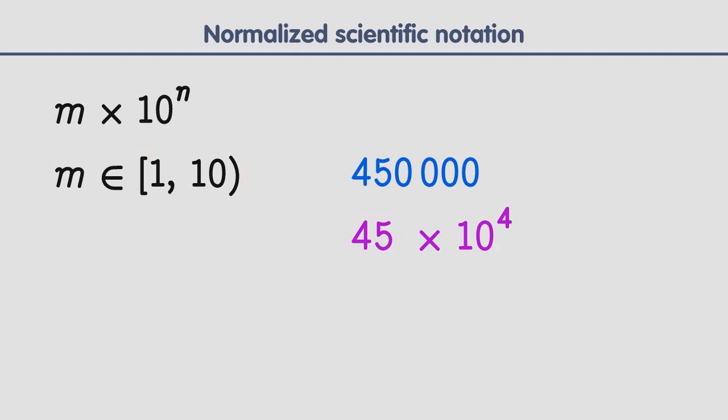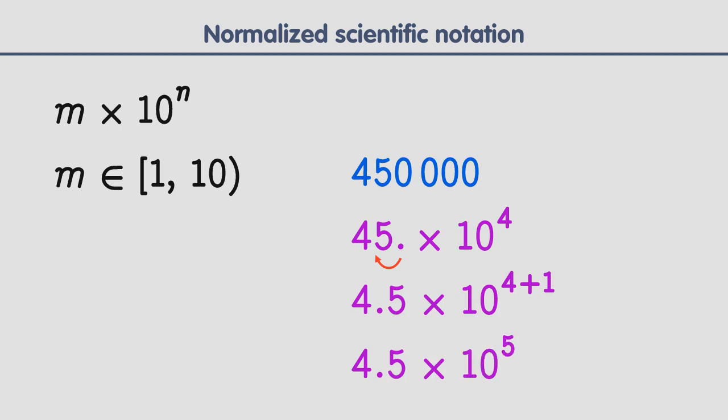So what we have to do is shift the decimal point to the left until we have a number between 1 and 10. The decimal point in the number 45 is right after the 5 — we just don't need to show it. If we shift it one place to the left, we will get 4.5, and 4.5 is a number between 1 and 10. But since shifting the decimal resulted in a number that is 10 times smaller than before, to compensate and keep the value the same, we need to increase the exponent of 10 by 1. So instead of 10 to the 4th power, we will get 10 to the 5th power.